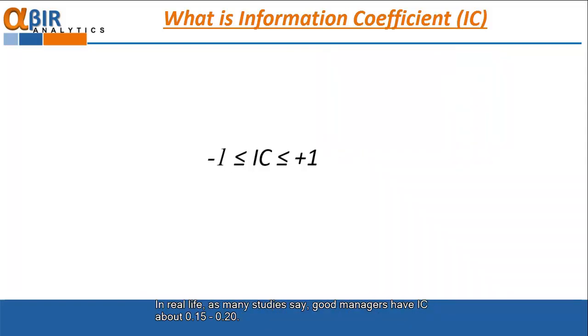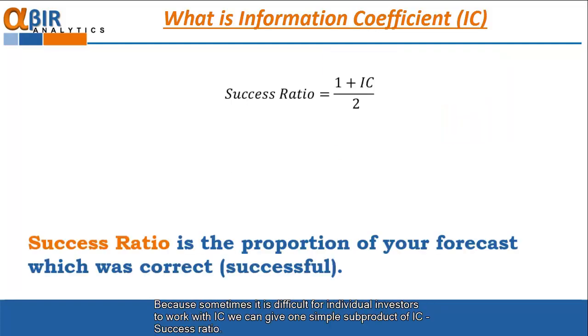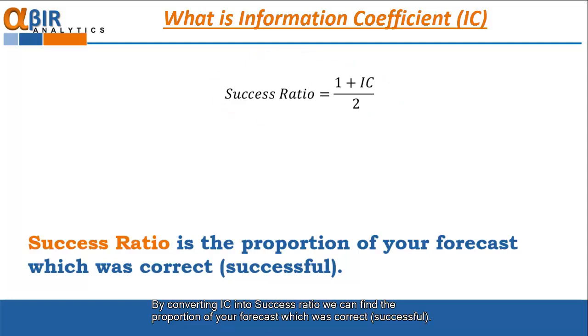In real life, as many studies say, good managers have IC about 0.15 to 0.20. Because sometimes it is difficult for individual investors to work with IC, we can give one simple sub-product of IC: success ratio. By converting IC into success ratio, we can find the proportion of your forecast which was correct or successful. Now it seems more complicable.